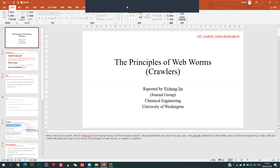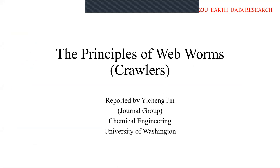Tonight we're going to have three speakers. Each of them are going to give a very brief introduction about some basic fundamental principles of how they're working out for their tech projects. The first one is the Internet Worms group, presented by Jin Yicheng, currently a student in chemical engineering at the University of Washington, Seattle. Please go ahead.